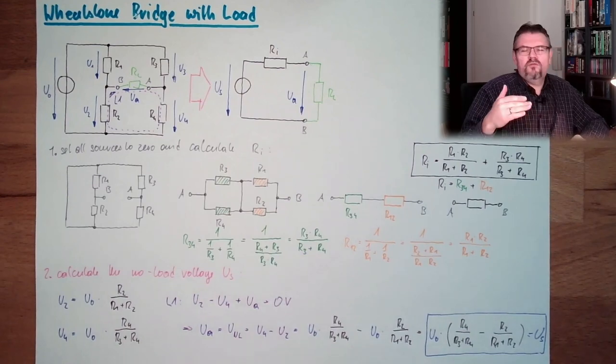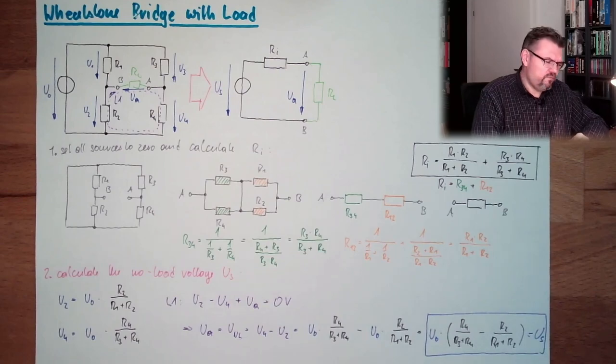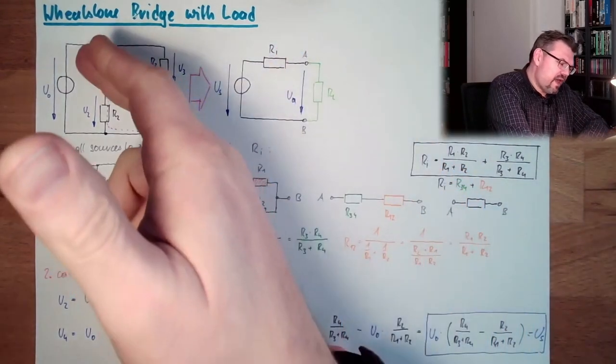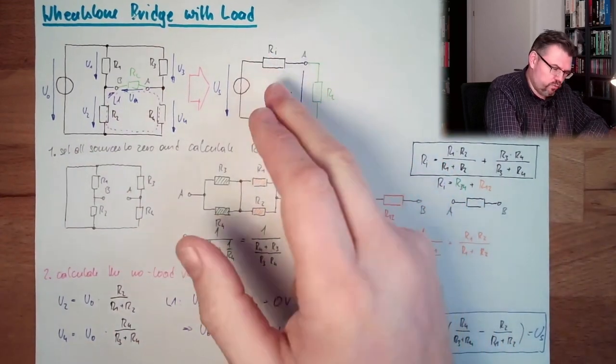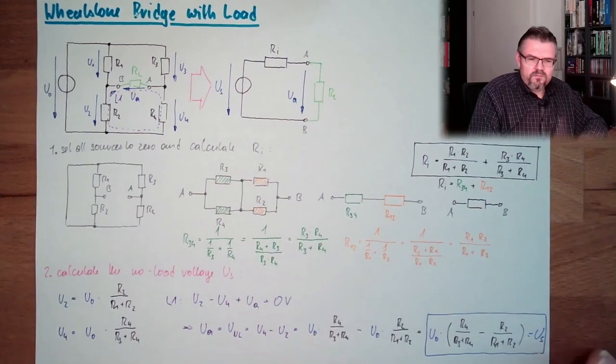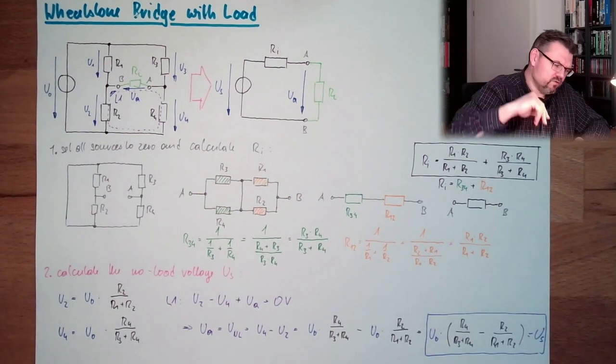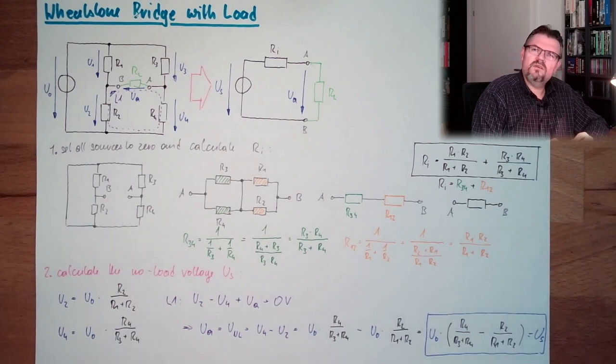This means if I have, for instance, I don't know, 100 ohms, I have 100 ohms, then I have also everywhere 100 ohms, then I have here also 100 ohms.